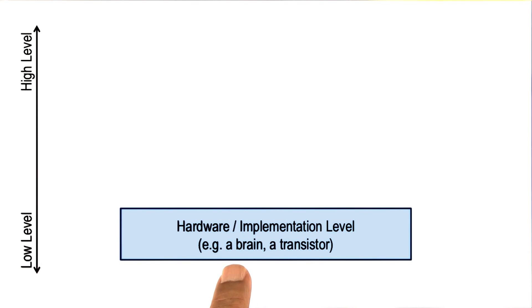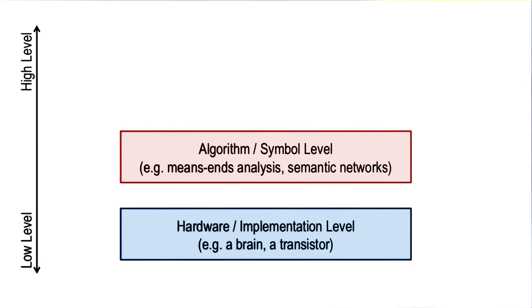So we can talk about a brain or transistors or this microchip. At the next level, we can talk about the kinds of methods and the kinds of representations we have been talking about. Means-ends analysis that has an algorithm associated with it. A semantic network that's a knowledge representation in some symbolic form.